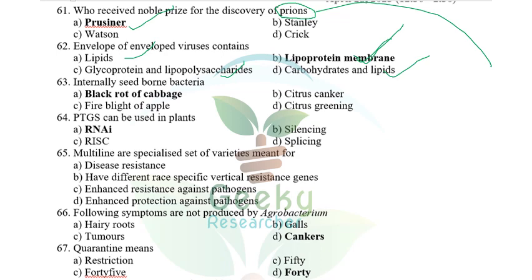Internally seedborne bacteria — wheat loose smut is an internally seedborne fungus. Among the options — citrus canker, fire blight of apple, citrus greening, and black rot of cabbage — black rot of cabbage is an example of both internally and externally seedborne bacteria. Out of the given options, black rot of cabbage is the internally seedborne bacterium.